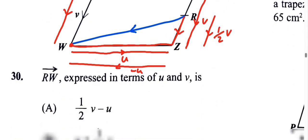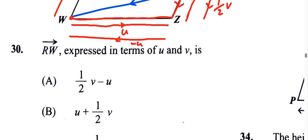And let's see if any option is written in that form, half v minus u. Answer is a.